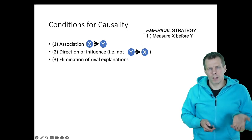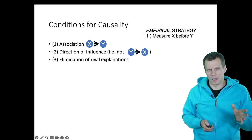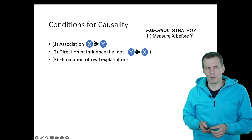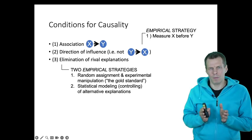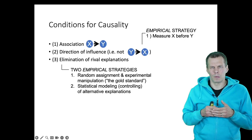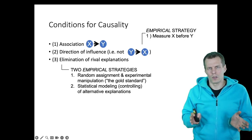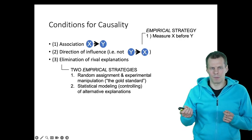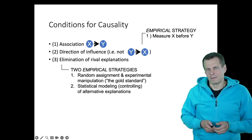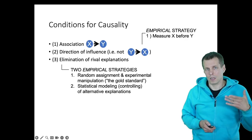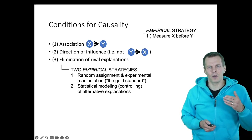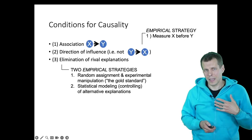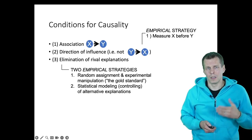For eliminating rival explanations, such as the size effect, there are two strategies. The first is the experiment, which is the ideal approach: randomly assign companies into two conditions — one receives the treatment, the other doesn't — then compare outcomes. Random assignment and experimental manipulation together allow causal conclusions. However, this is generally not feasible when studying companies and CEOs. The second and more common approach is to construct a statistical model that accounts for alternative explanations using control variables.